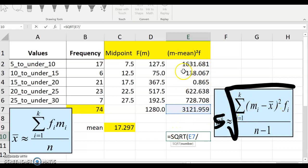this column here, the sum of the midpoint minus the mean square times the frequency. And we're going to divide that by n minus 1. Well, I know n is 74. It's over here. 74 minus 1. I'm just going to go ahead and put 73.